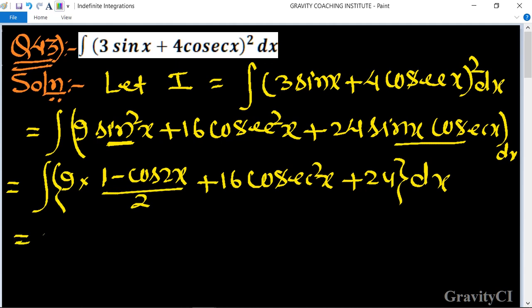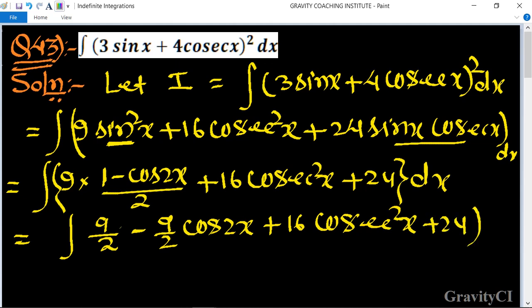So is equal to integration... ab iska multiply kar dete hain, to yeh hoga 9 upon 2 minus 9 upon 2 cos 2x plus 16 cosec² x plus 24 dx.